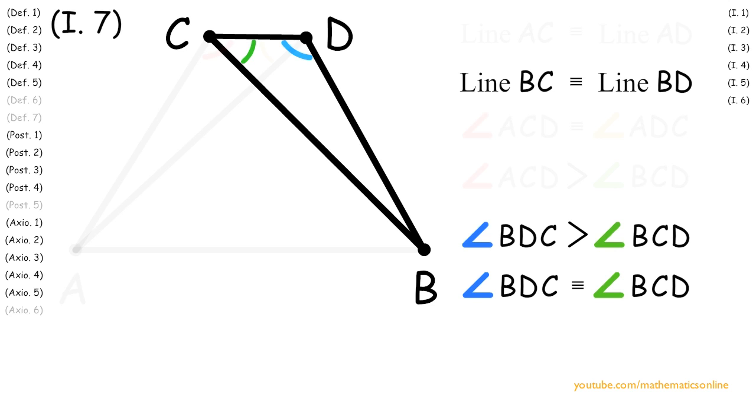But we just showed that angle BDC is also greater than angle BCD. It's not possible to have both true at the same time, so we have a contradiction.